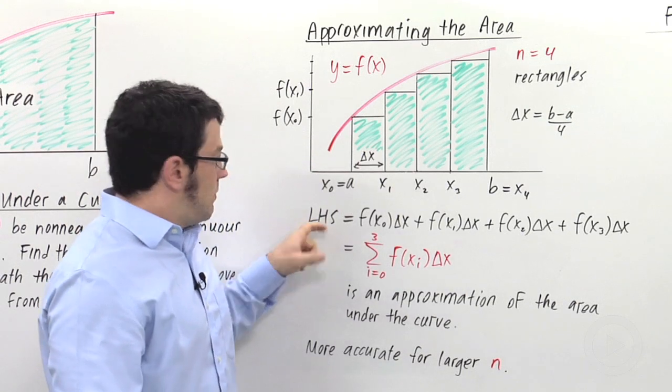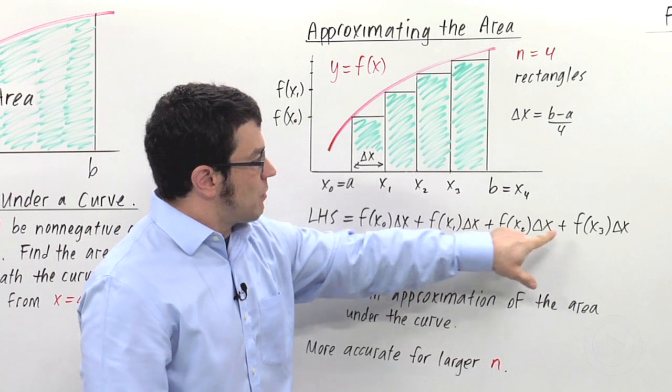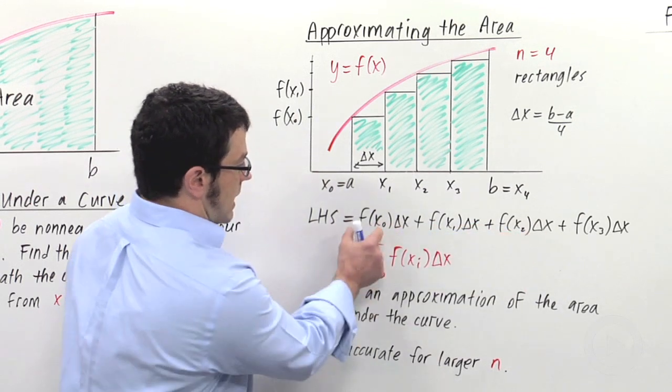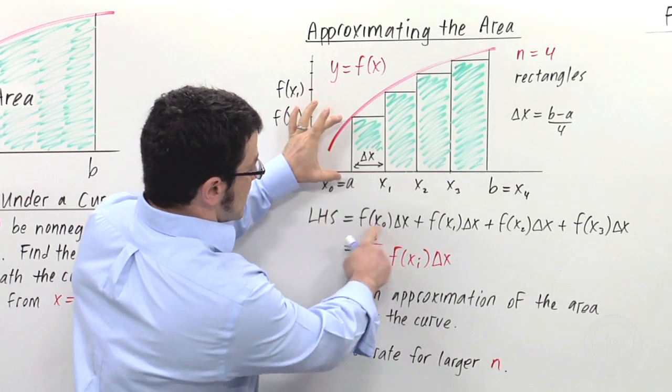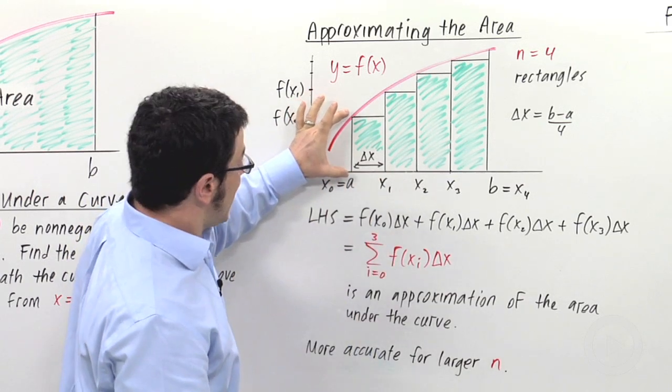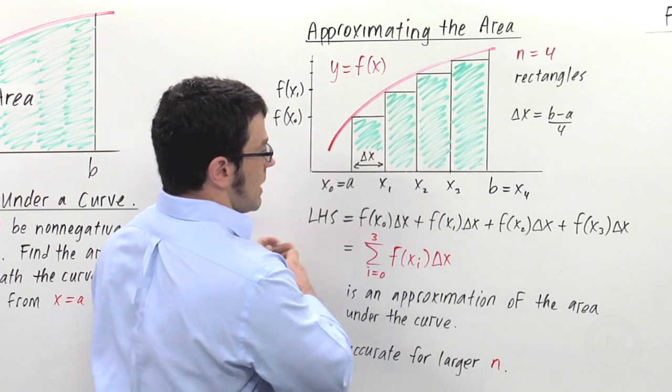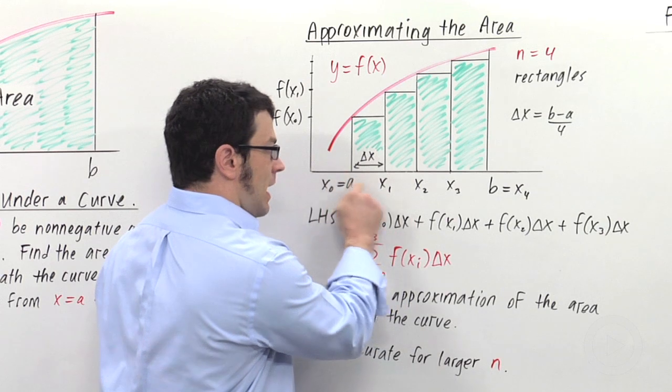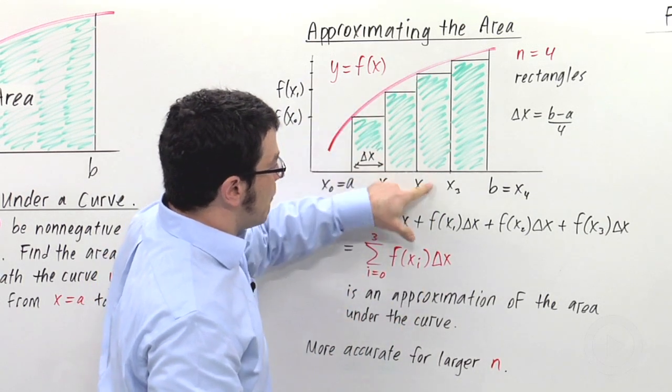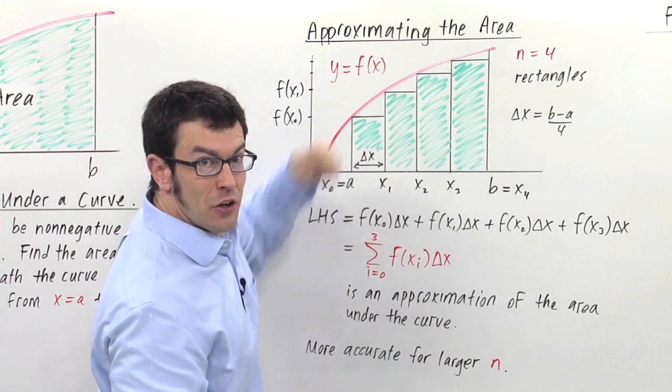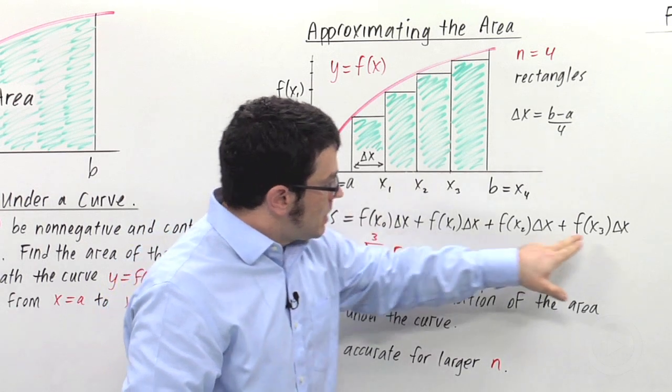This is a left-hand sum. The left-hand sum is the sum of areas of a bunch of rectangles. Each of these areas is a height times a width. Delta x is the width in this first rectangle. f(x₀) is the height. In the second one, delta x is the width, and f(x₁) is the height. We're getting the heights from the left-hand x values for each rectangle. So the height of this rectangle will be f of this value. That's where the rectangle touches the curve.